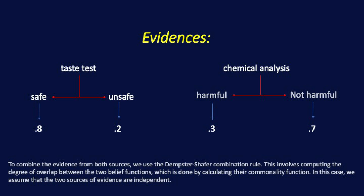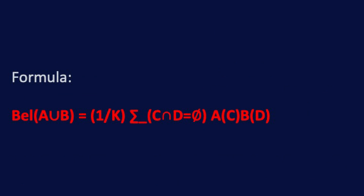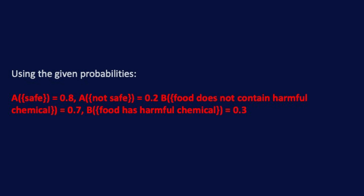To combine the evidence from both sources, we use the Dempster-Shafer combination rule. This involves computing the degree of overlap between the two belief functions, which is done by calculating their commonality function. In this case, we assume that the two sources of evidence are independent. Using the formula for the Dempster-Shafer combination rule with the given normalization probabilities.